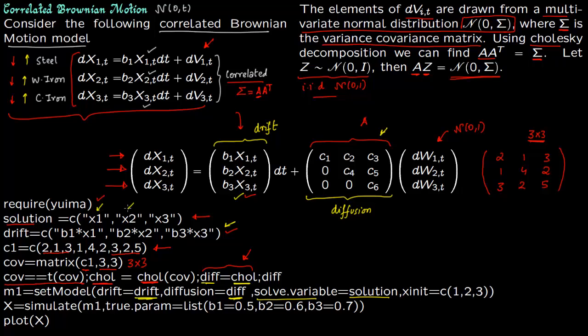You're going to solve for x1, x2 and x3. You can also set the initial value. So I've set the initial value as 1, 2 and 3. So 1 is initial value of x1 that is steel say, 2 is initial value of say wrought iron, and 3 is initial value of say cast iron. So I've just taken these three terms. You can just set your own values.